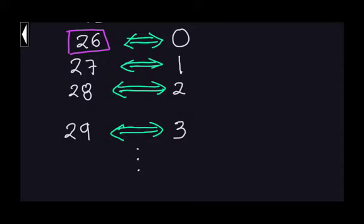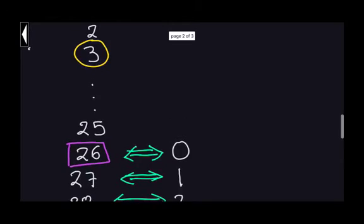Basically, we don't have an infinite number of Caesar ciphers. We have ciphers from 0 to 25, which indicate the number of positions we're going to shift. Once we go over that point, shifting 26 to the right is exactly the same as 0, and 27 is exactly the same as 1.